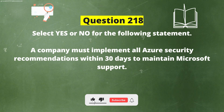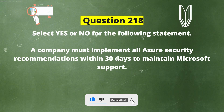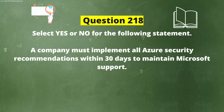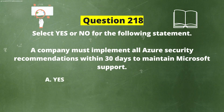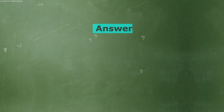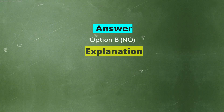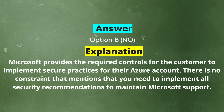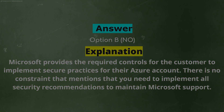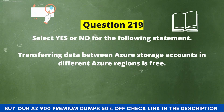Next question: A company must implement all Azure security recommendations within 30 days to maintain Microsoft support. Option A: Yes. Option B: No. The correct answer is Option B, No. Microsoft provides the required controls for the customer to implement secure practices for their Azure account, but there is no constraint that requires you to implement all security recommendations in order to maintain Microsoft support.